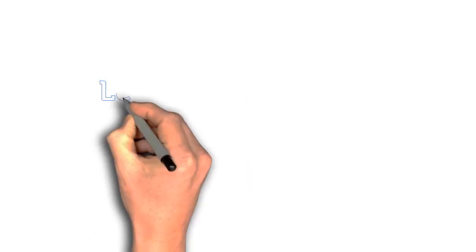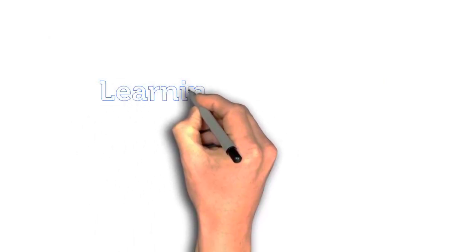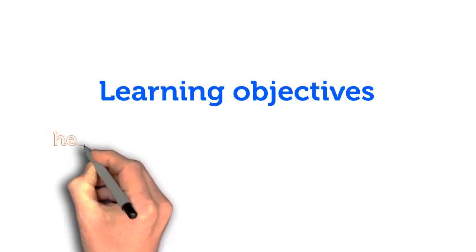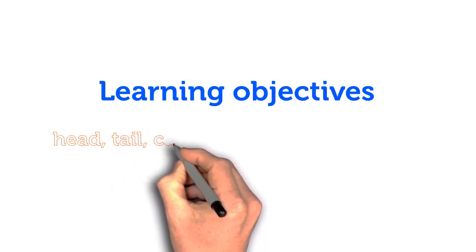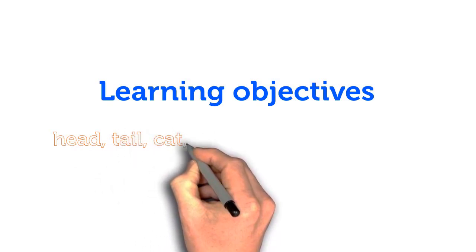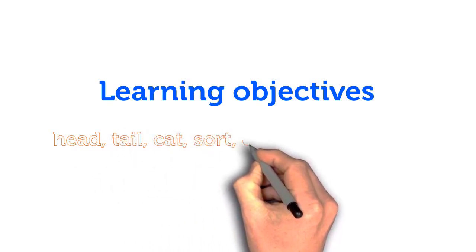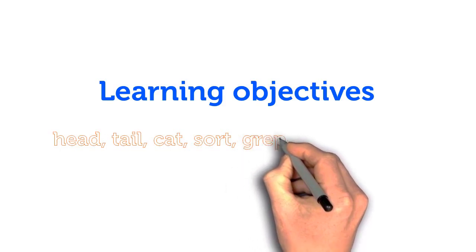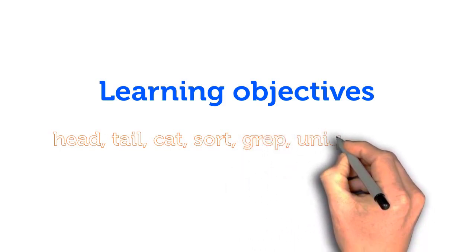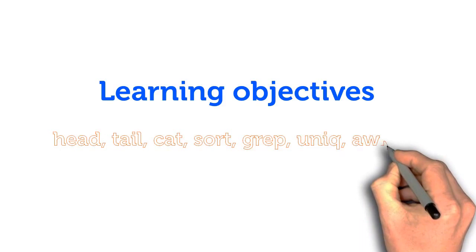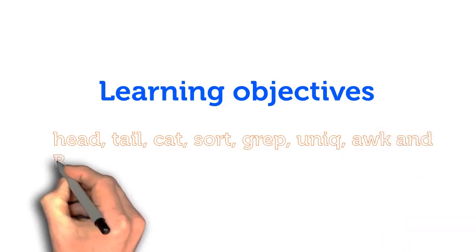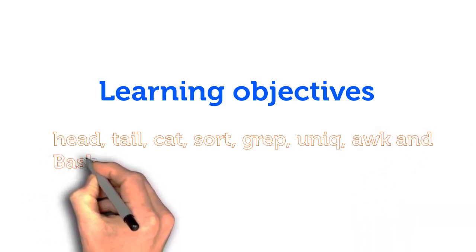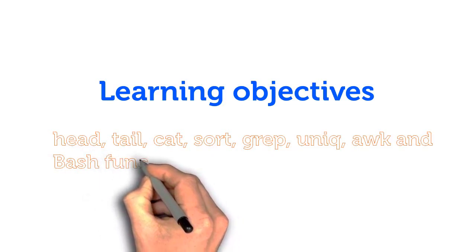Learning Objectives: By completing this, you will learn to use the following bash commands. Head — output the first part of files. Tail — opposite to head. Cat — concatenate and print files. Sort — sort file contents. Grep — search the input files for lines containing a match to a given pattern list. Unique — remove duplicate entries. Awk — a programming language. And Bash functions.